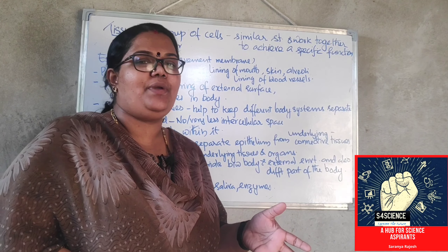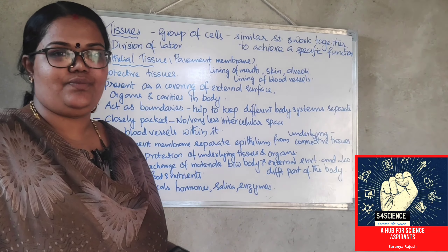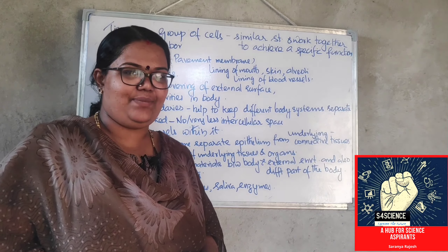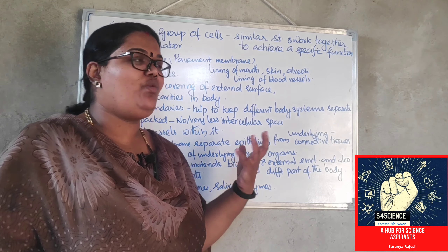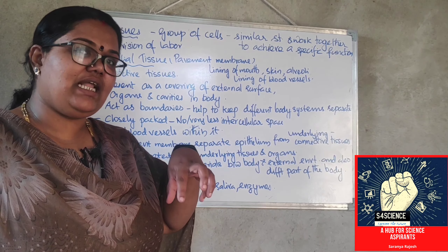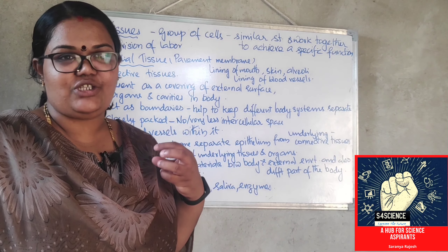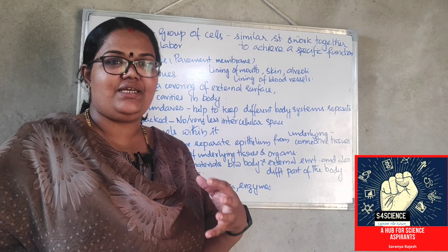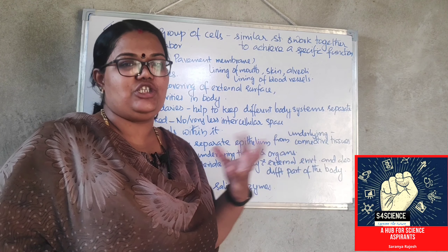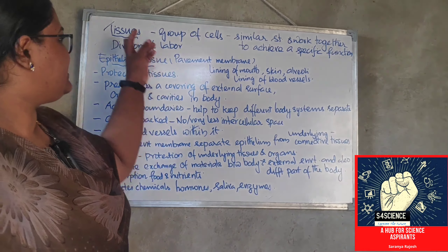Before going to the topic, we have to first understand what we mean by tissue. We have learnt the cell chapter — the basic unit of life. So what is actually tissue? There will be a group of cells which have similar structure and they will work together to do some specified or specialized function. That group will be named as a tissue.